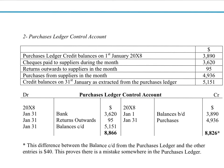The purchases ledger control account checks for errors between the suppliers' accounts in the purchases ledger and the general ledger containing all other T-accounts derived from day books. In this example, the balance at the beginning of the month is 3,890, meaning we owe our creditors that amount. At the end of the month, the balance brought down shows we owe 5,151. Other information — amounts paid to suppliers from bank or cash accounts, returns to suppliers of 95, and additional credit purchases through the month — is taken from the general ledger, compiled from the day books.